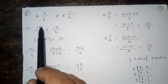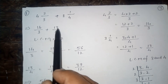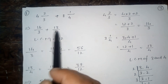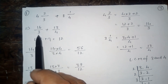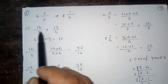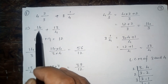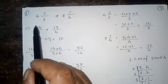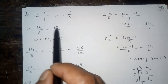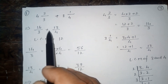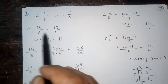Now look here. We have 14 upon 3 plus 13 upon 4. These two fractions are improper fractions. But this pair of fractions are unlike fractions, because their denominators are different.